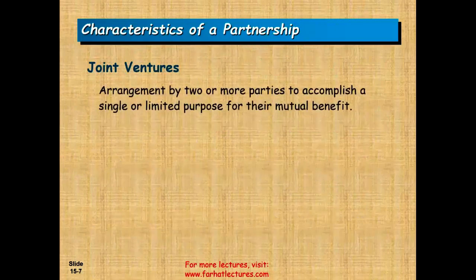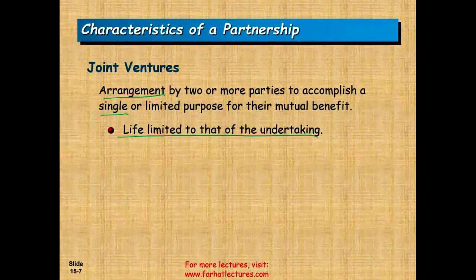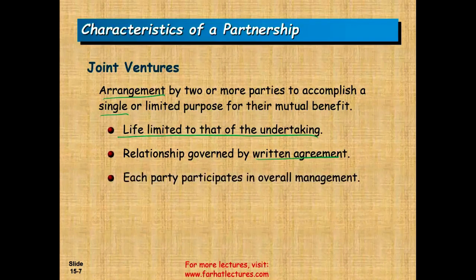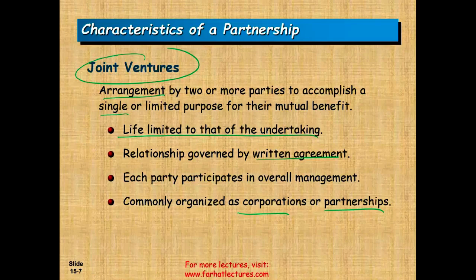We also have something called a joint venture, which is a little different. Joint ventures are arrangements by two or more parties to accomplish a single or limited purpose for their mutual benefit. For example, two parties might form a corporation or partnership called a joint venture to undertake a limited-horizon real estate project — like building a stadium. The relationship is governed by a written agreement, each party participates in overall management, and the venture is dissolved once the purpose is complete. Know the difference between a joint venture and a general or limited partnership — it can appear on the CPA exam.